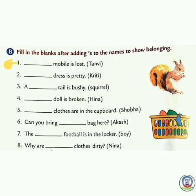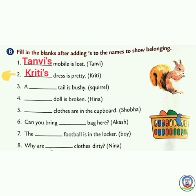Number one: Dash mobile is lost. Whose mobile? Tanvi. You will add apostrophe S after Tanvi, so it will become Tanvi's mobile is lost. Number two: Dash dress is pretty. Whose dress? Kriti's dress — not 'Kriti dress is pretty' but Kriti's dress is pretty. You have to add apostrophe S, so you write Kriti's.